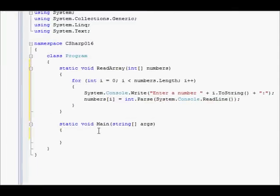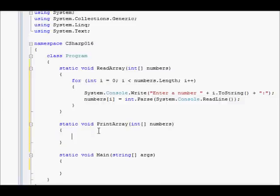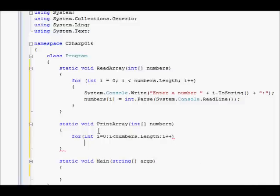Well before that we will create another method that will display the numbers. So static void display or maybe print array print array int numbers there we go. And for int i equals zero i smaller than numbers dot length and i plus plus. So far this is the same code we have used every time.